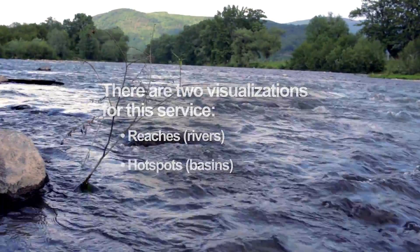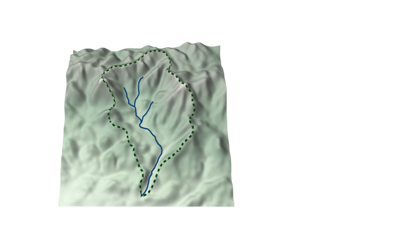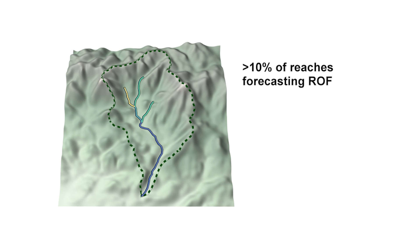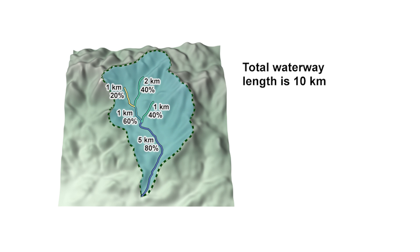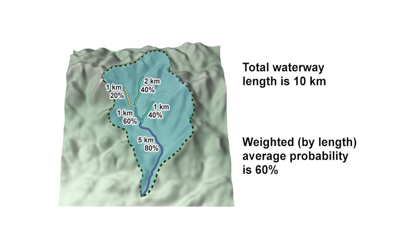For the hotspots, a basin is colored on the map when rapid-onset flooding is forecast for more than 50% of reaches of stream order four or below during the five-day period. The color corresponds with the average probability of rapid-onset flooding for all small stream reaches in that basin where rapid-onset flooding is forecast.